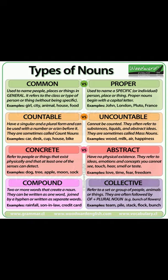Uncountable Nouns. Uncountable nouns are nouns that cannot be counted. They often refer to specific subjects, such as substances, liquids, gases, and abstract ideas. Examples of uncountable nouns: wine, tea, meat, grit, air, oxygen, silver, happiness.